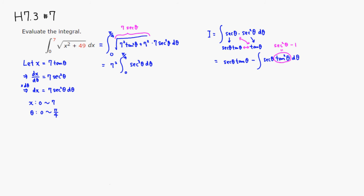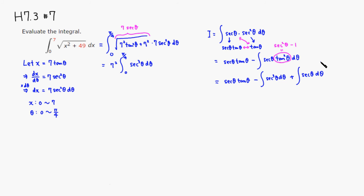So we have secant of theta times tangent of theta, minus the integral of secant of theta times (secant squared of theta minus 1) dθ. Expanding, that's secant cubed of theta minus secant of theta. Splitting the integral: minus integral of secant cubed of theta dθ, plus integral of secant of theta dθ. The first integral is I again, so we have I = secant(θ)tan(θ) − I + integral of secant theta dθ.